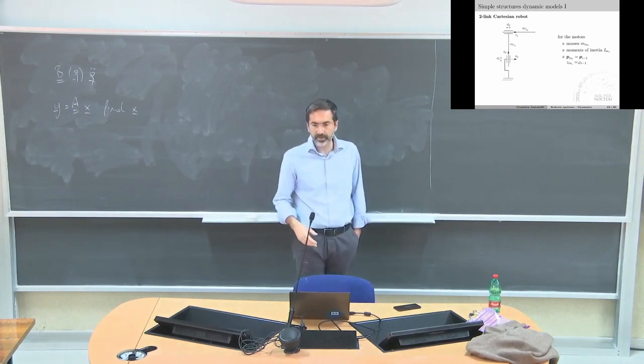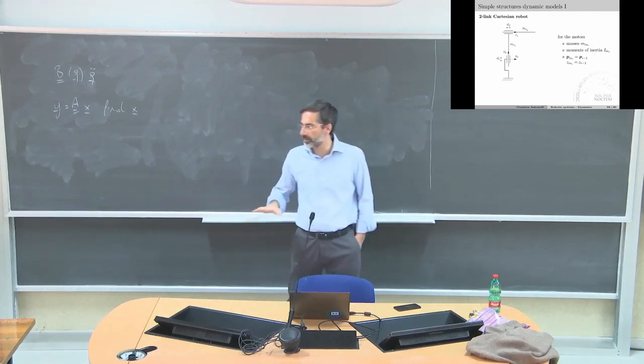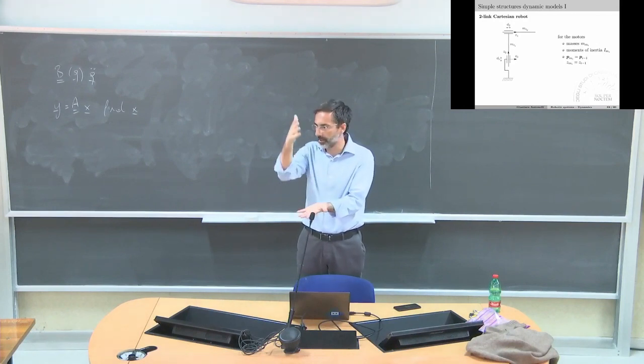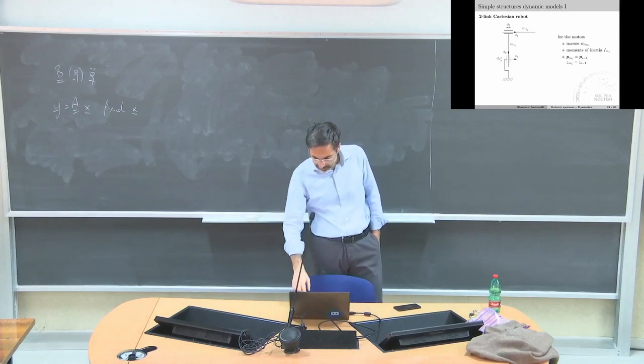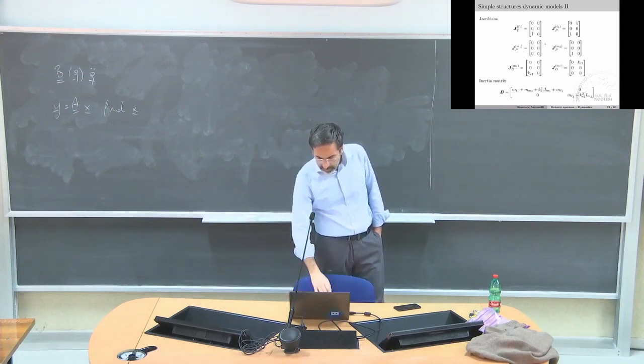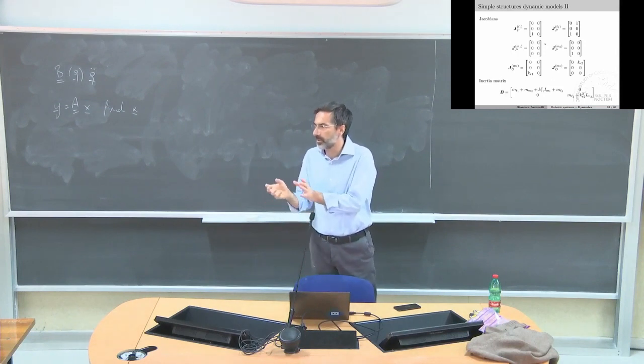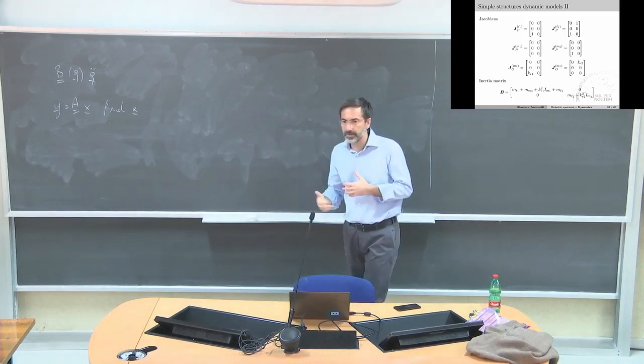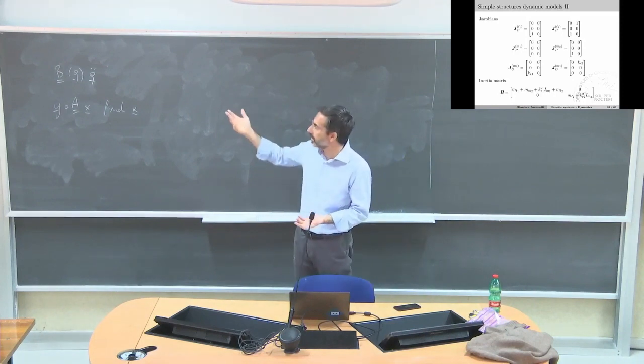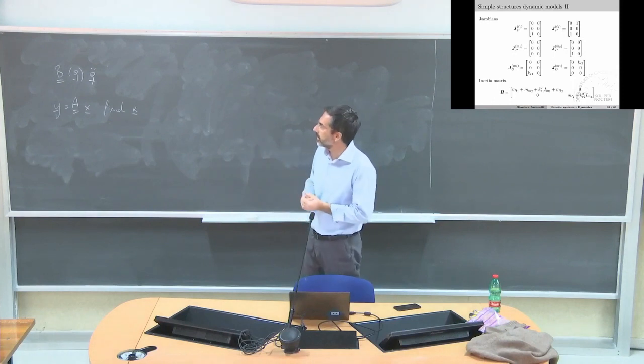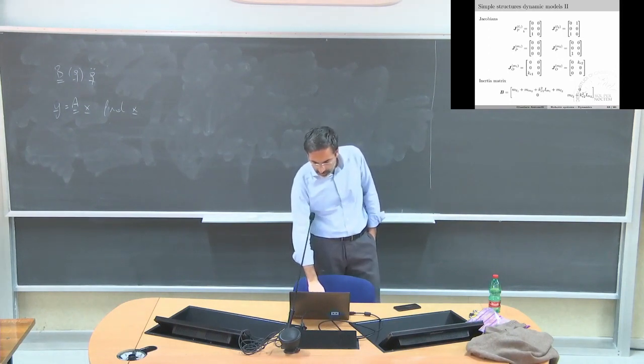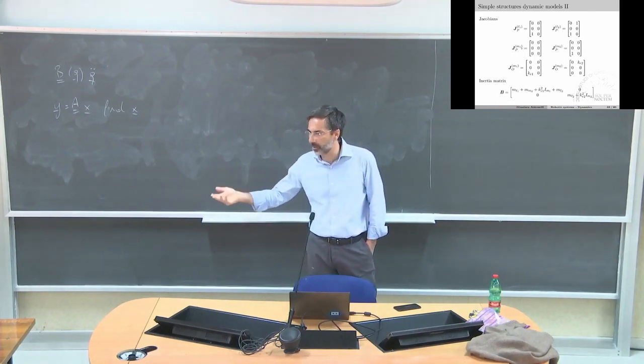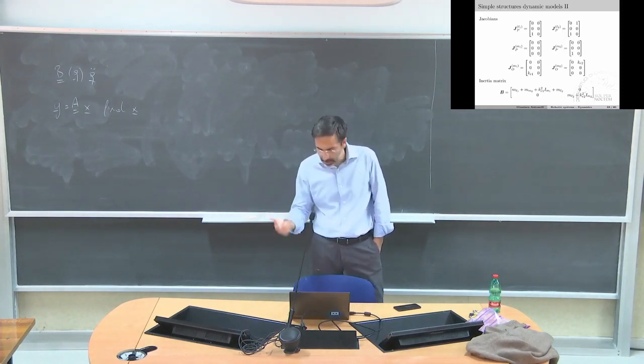Two-link Cartesian robot - this is basically a plotter. Plotters are two-link Cartesian, but on the horizontal plane. In this case, we consider a vertical one. We are not going to go into the details, but I want you to see that all the Jacobians are very easy. We already have the Jacobians. Here we can even write them down symbolically and compute the inertia matrix. Those are the Jacobians that we need - the Jacobians with respect to the center of mass and the position of the motor, so we have to make some assumptions on where the motors are.